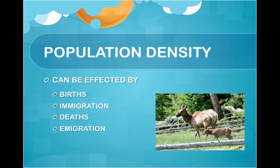Population density can be affected by births, immigration (which is moving in), death, and emigration (which is moving out).